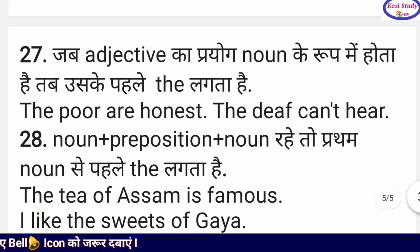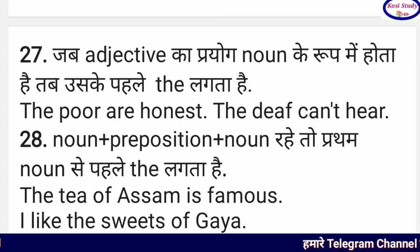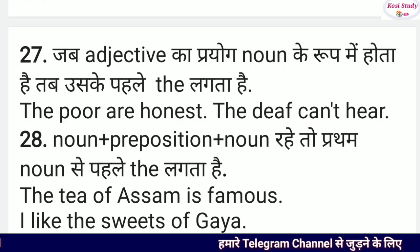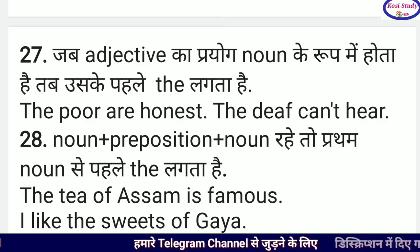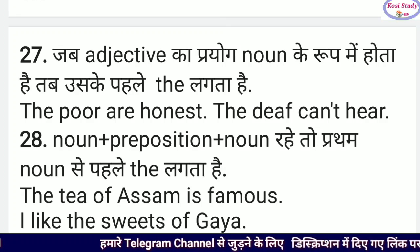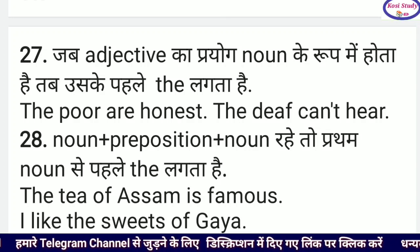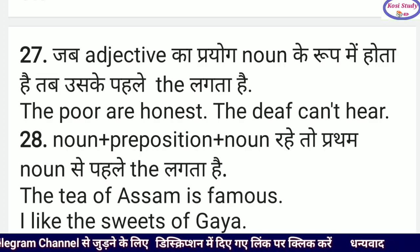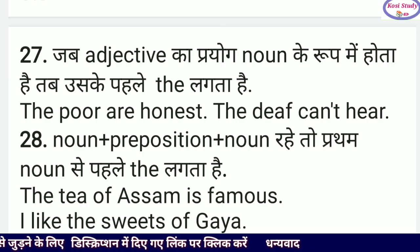जब adjective का प्रयोग noun के रूप में होता है, तब उससे पहले 'the' का प्रयोग करते हैं। For example: 'The poor are honest' — यानि गरीब लोग इमानदार होते हैं। यहाँ 'poor' adjective है और उसे noun के रूप में प्रयोग करने के लिए उससे पहले 'the' लिखा जाता है। Similarly, 'The deaf can't hear' — बहरे सुन नहीं सकते — यहाँ भी 'deaf' adjective है और 'the' लगाकर इसे noun का रूप दिया गया है।